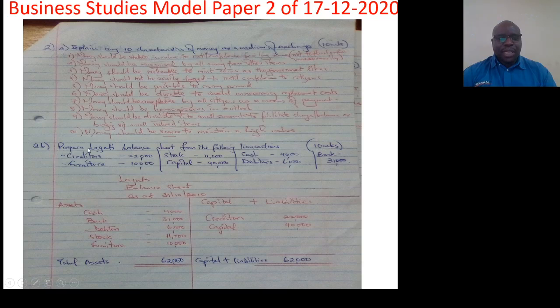Question number 2b. Prepare Lagart's balance sheet from the following transactions. Ten marks. Creditors 22,000, furniture 10,000, stock 11,000, capital 40,000, cash 4,000, and debtors 6,000, bank 31,000. Lagart's balance sheet is at 31st October 2010. This is a date that we have fixed because the question does not have a date. So you must have a date for your balance sheet or any other final record.